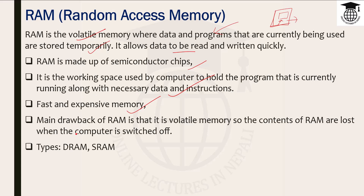RAM is divided into two types: DRAM and SRAM. DRAM is Dynamic RAM and SRAM is Static RAM. The difference between Dynamic RAM and Static RAM is important for examination purposes.